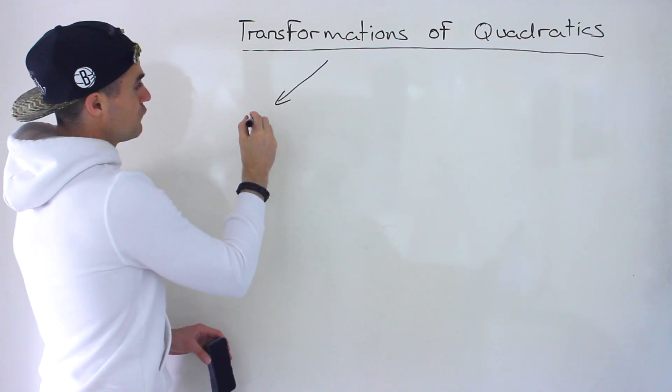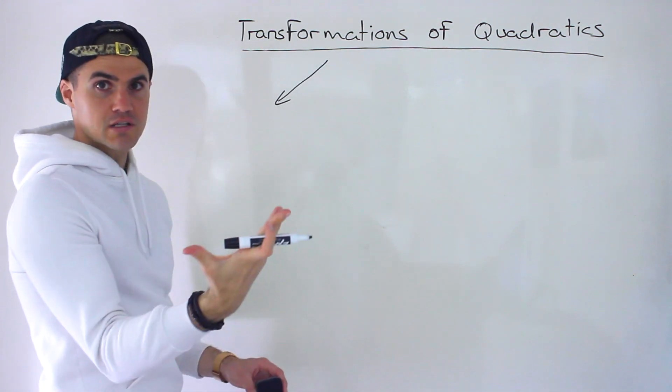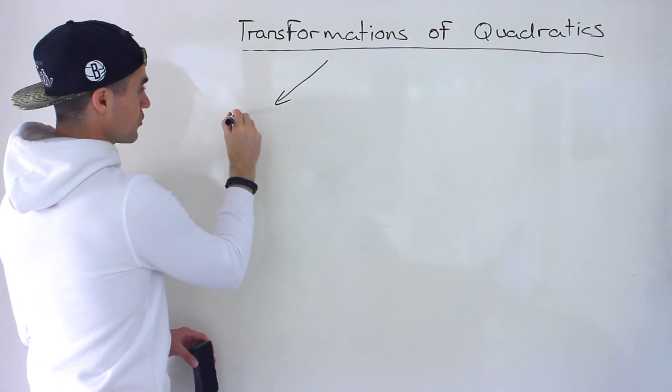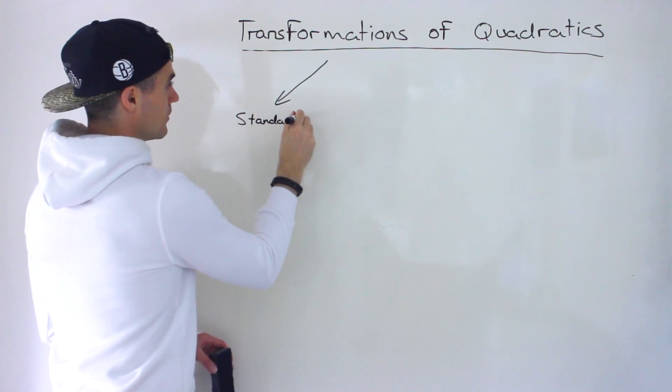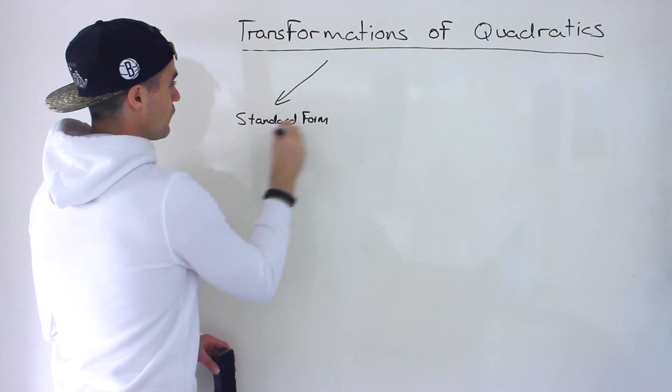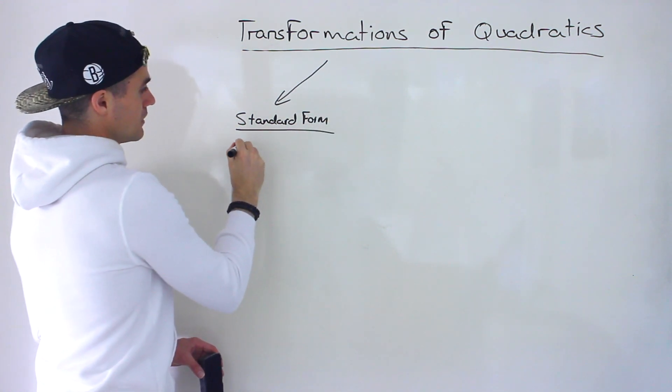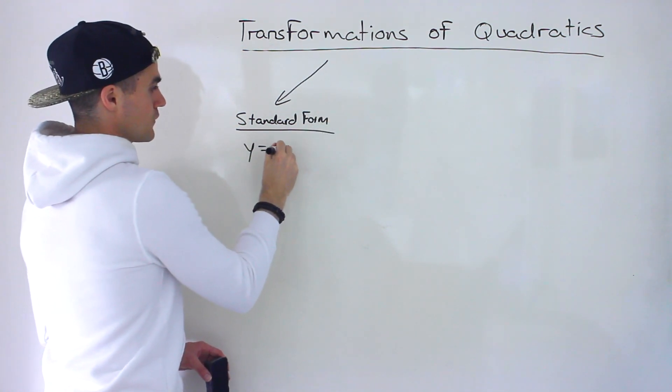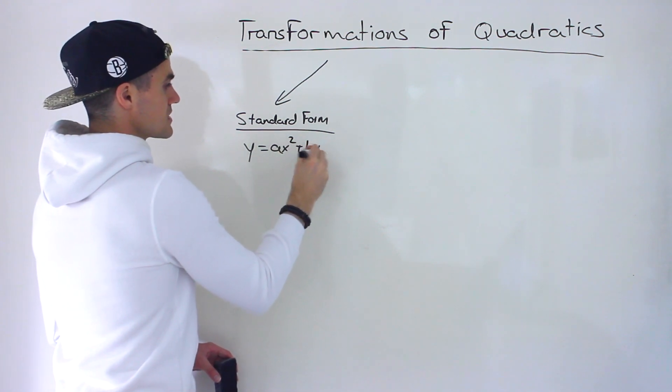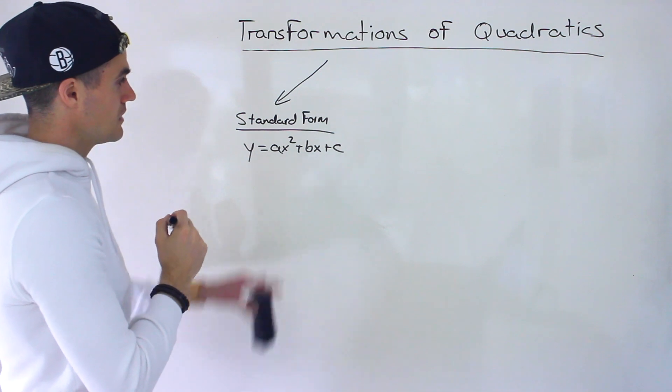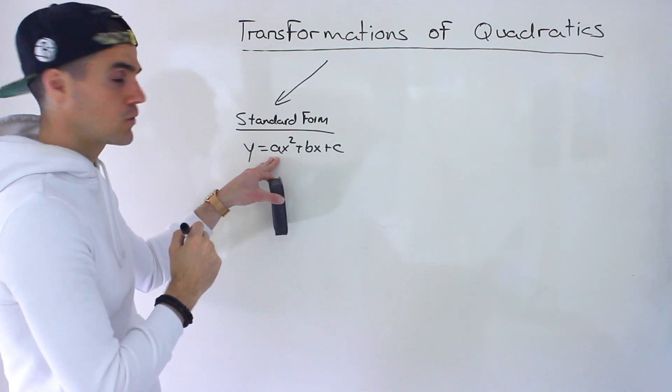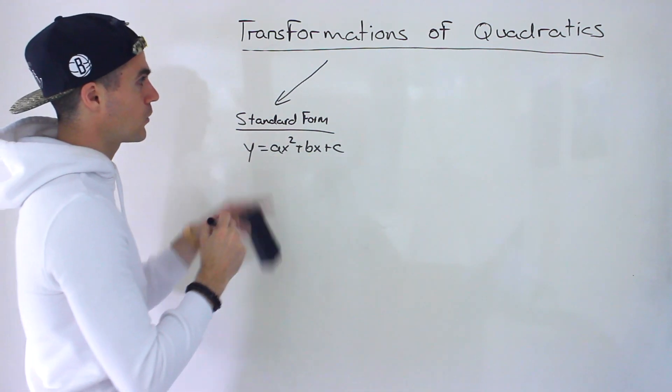So the form that we've been talking about mostly so far in previous sections is the standard form. A standard form quadratic, the format that it's in, as we've gone through in previous videos, is ax² plus bx plus c. This is called standard form quadratic. But this is not the only format a quadratic can take.